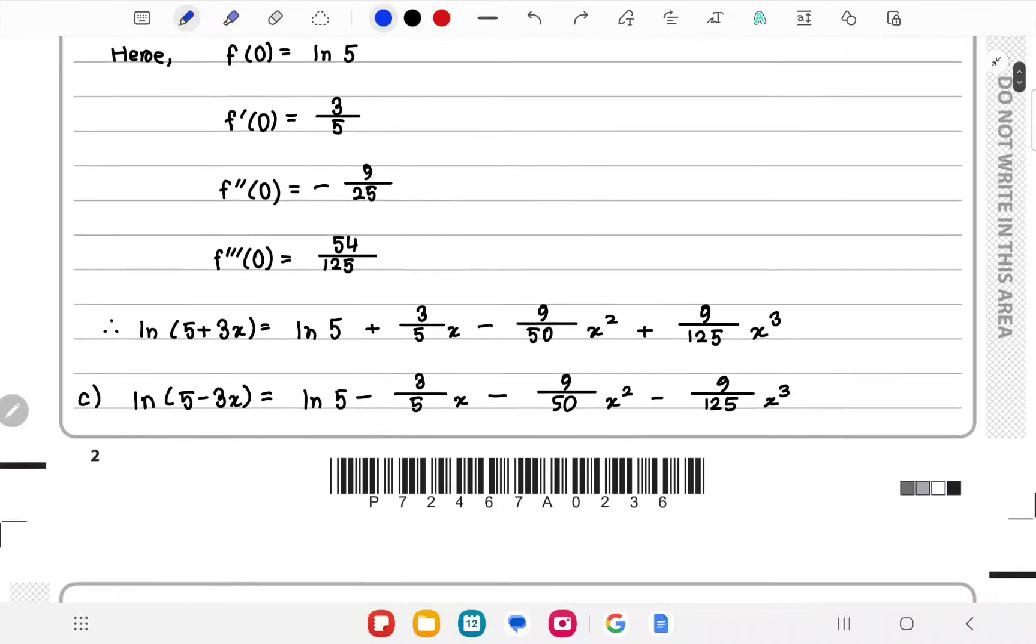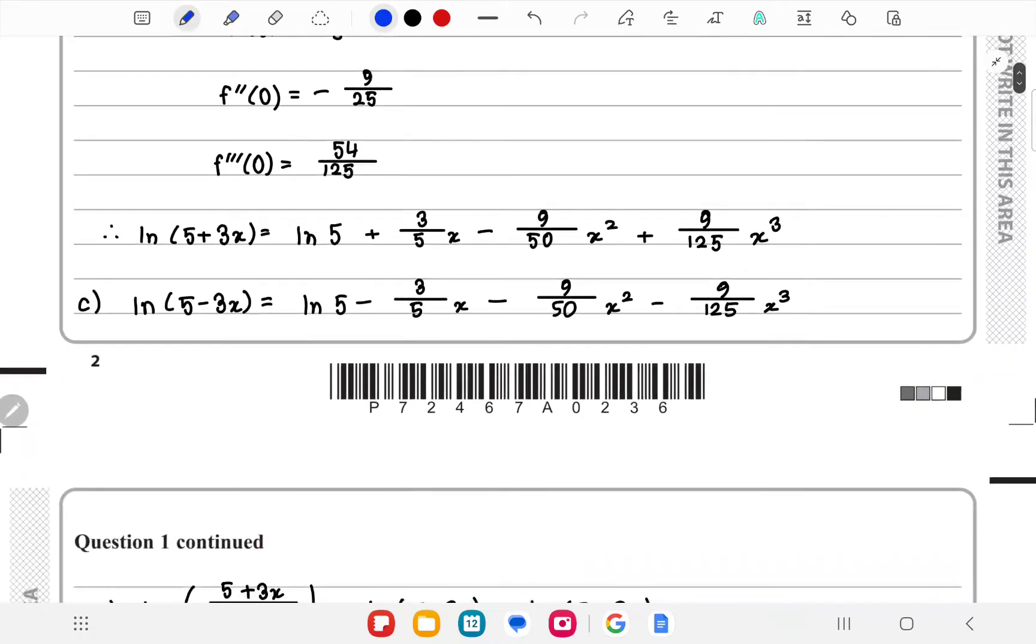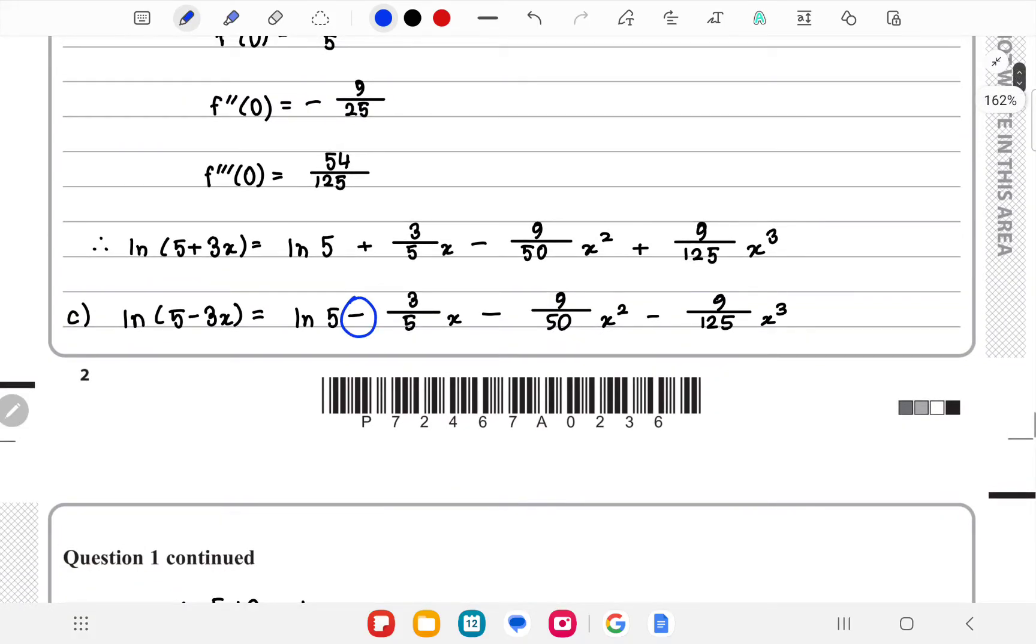And for part c, instead of ln(5+3x) you have ln(5-3x), so every alternating term will have a different sign.